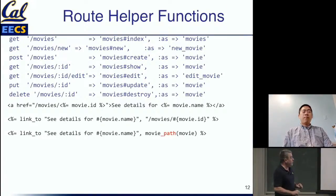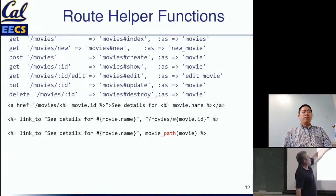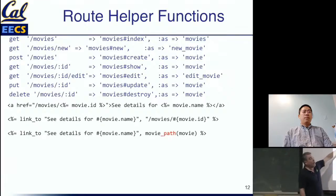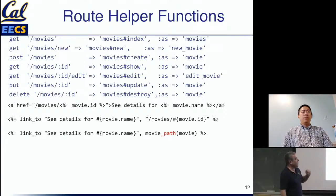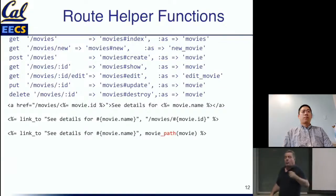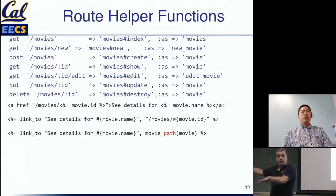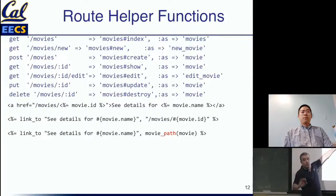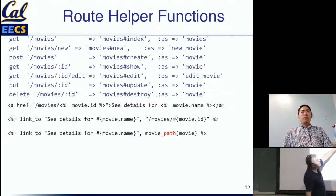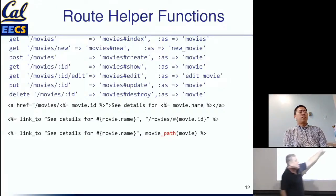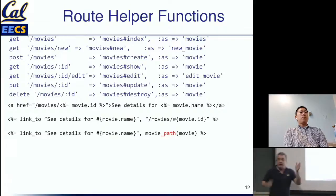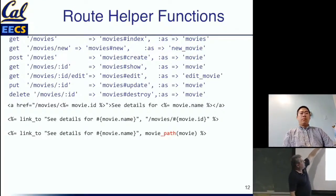A second way is to use the 'link_to' Ruby helper, which generates a URI for you. 'link_to' is a plain Ruby function that's part of the Rails library. The first argument is the clickable text the user sees; the second is the URI. This generates the exact same HTML as the hand-coded anchor tag. But there's an even better way — the preferred approach seen in well-written Rails apps — which is to call the helper 'movie_path', which was automatically generated for us.